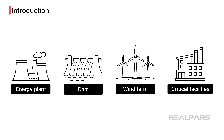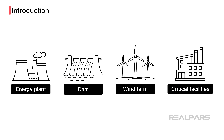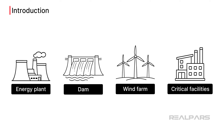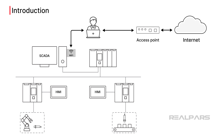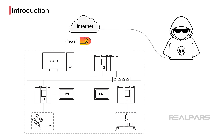Operational technology, or OT, refers to the physical hardware and software used to monitor and control industrial equipment, processes, and infrastructure — the items we as automation engineers work with every day. Critical infrastructure such as energy plants, dams, and wind farms, as well as critical manufacturing plants, need to be aware of the many threats their systems face. Threats can come from a disgruntled employee who knowingly infects the network with a virus, or from an external source such as the internet, and each could do significant harm to the plant's OT infrastructure.